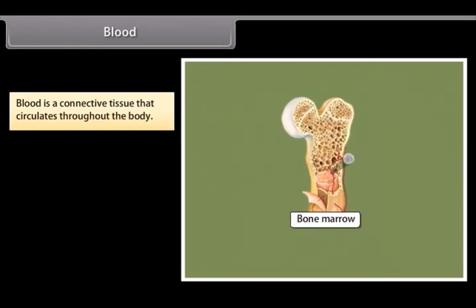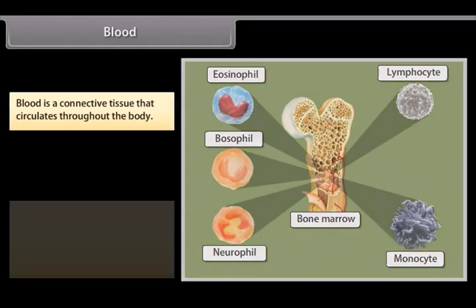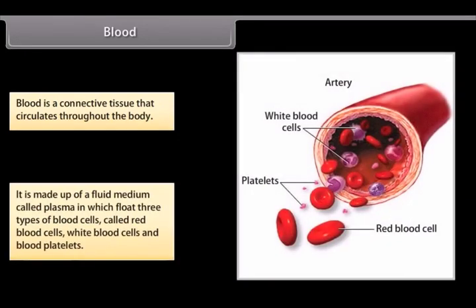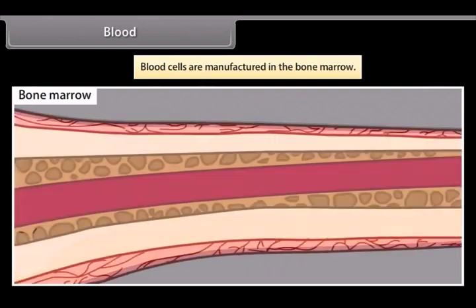Blood. Blood is a connective tissue that circulates throughout the body. It is made up of a fluid medium called plasma in which float three types of blood cells called red blood cells, white blood cells and blood platelets. Blood cells are manufactured in the bone marrow.